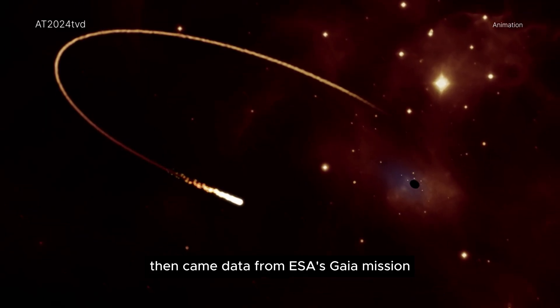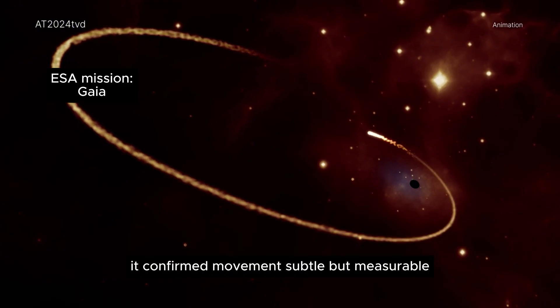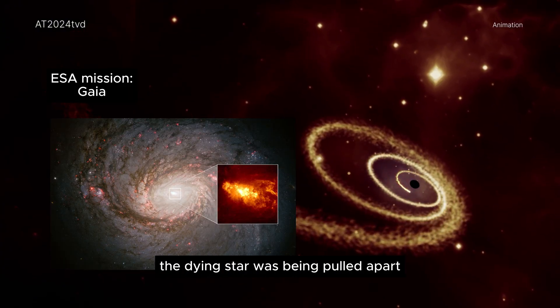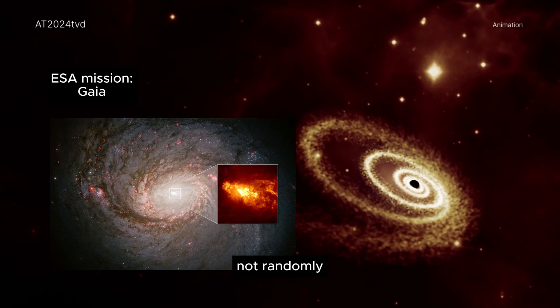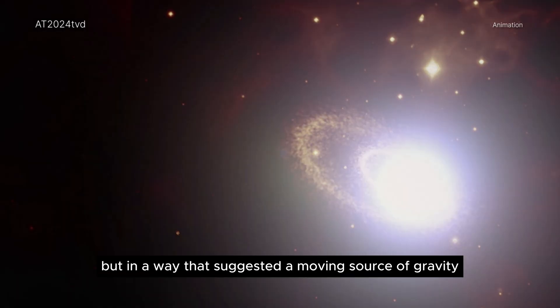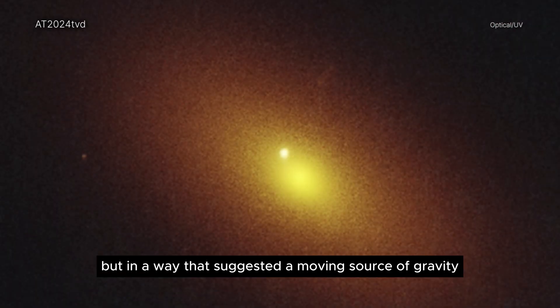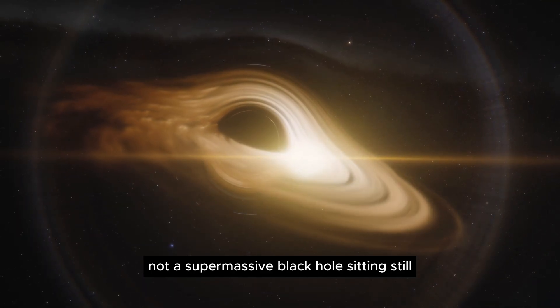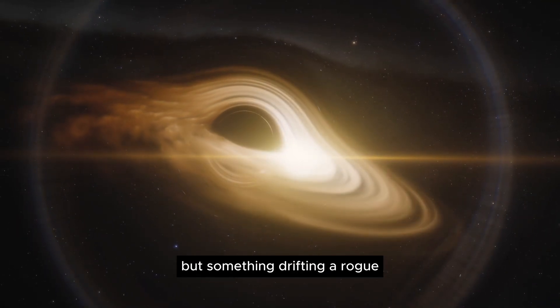Then came data from ESA's Gaia mission. It confirmed movement, subtle but measurable. The dying star was being pulled apart, not randomly, but in a way that suggested a moving source of gravity. Not a supermassive black hole sitting still, but something drifting. A rogue.